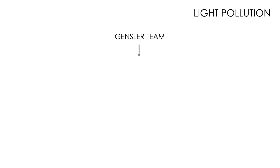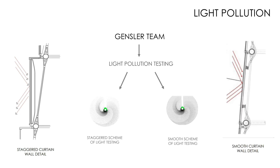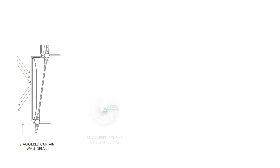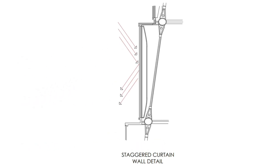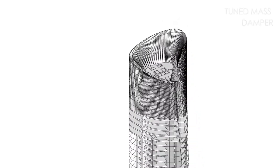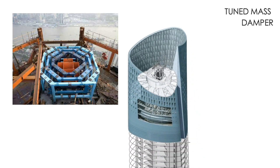The design team selected two schemes for light pollution testing: a staggered scheme and a smooth scheme. The test was conducted for a three-kilometer radius area. Studies showed that the staggered scheme caused less light pollution than the smooth scheme, which is why it was adopted. At the top of the tower, a tuned mass damper — designed to limit swaying at the top of the structure — was the world's largest at the time of its installation.